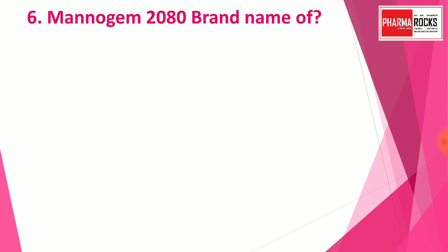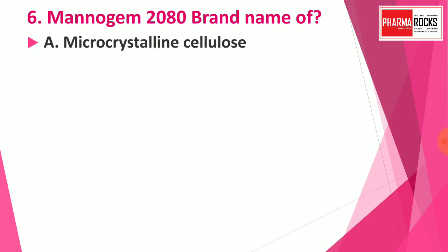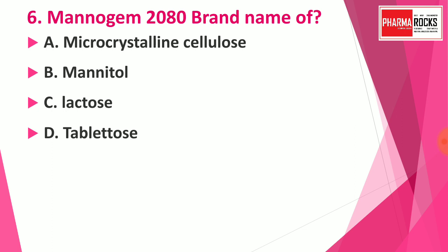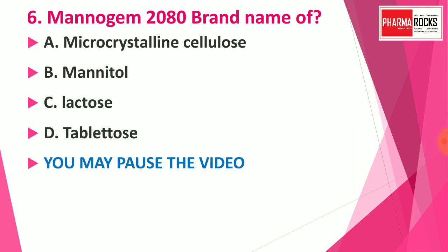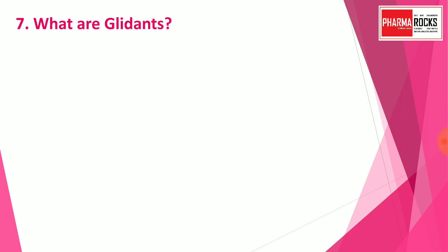Question number six: Mannogem 2080 is the brand name of — Option A: microcrystalline cellulose, Option B: mannitol, Option C: lactose, Option D: tabletos. You may pause the video to note down the correct answer. The correct answer is Option B: mannitol. Mannogem 2080 is the brand name of mannitol.